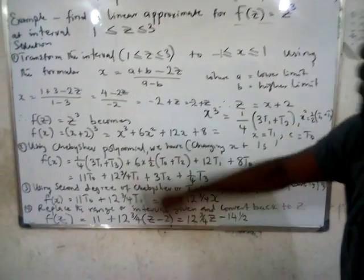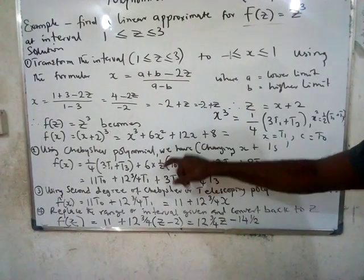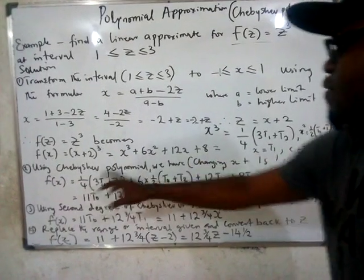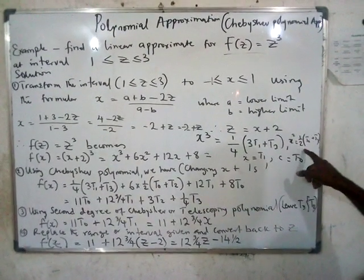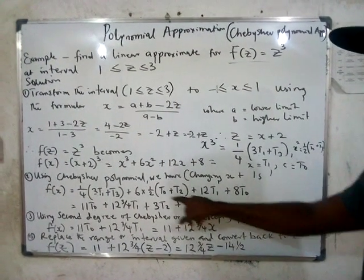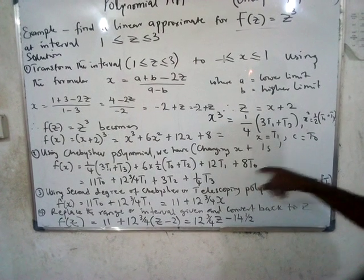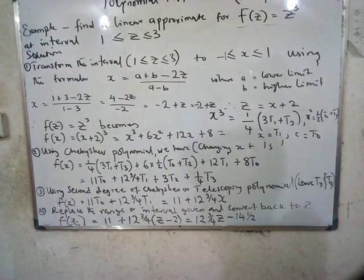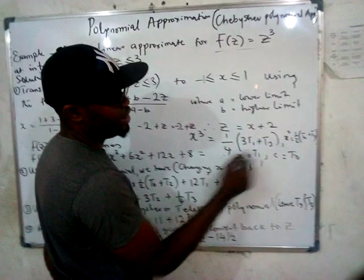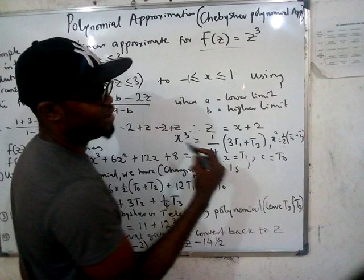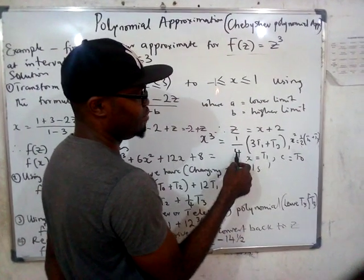So here we have x³, so in place of x³ we replace with (1/4)(3T₁ + T₃). Here we have 6x², we write the 6 as it was and replace x² with (1/2)(T₀ + T₂). This term has no coefficient, so we just replace directly. For the term with x, we write the 12 as it is and replace x with T₁. Then we write the 8 as it is but, since 8 is a constant, we multiply by T₀.